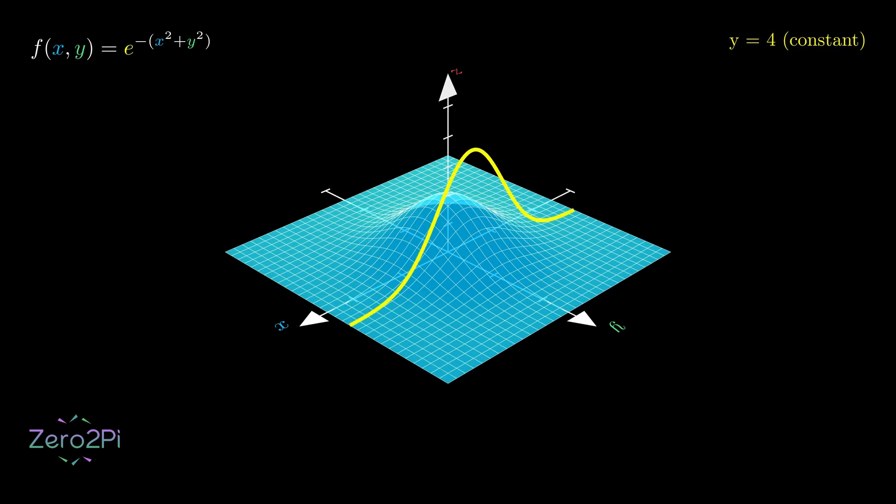Finding the partial derivative with respect to x means we have to hold y constant. It's like taking a vertical slice through our surface. The result is just a simple 2D curve. And for a 2D curve, we already know how to find the rate of change.